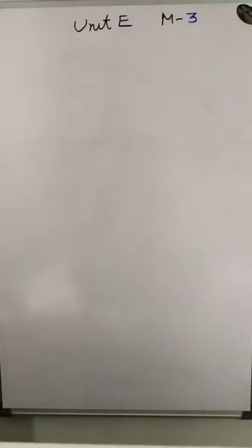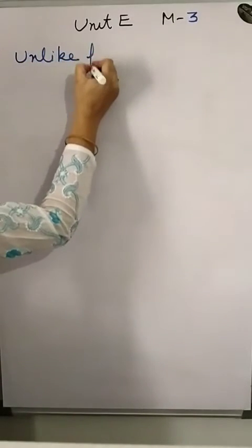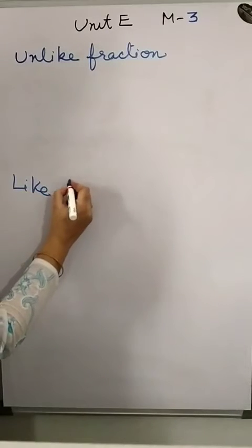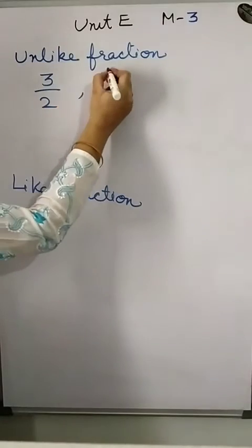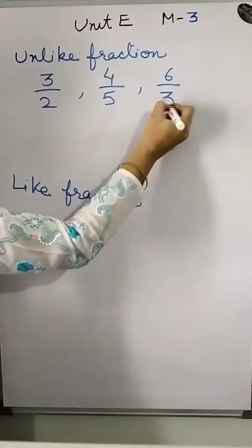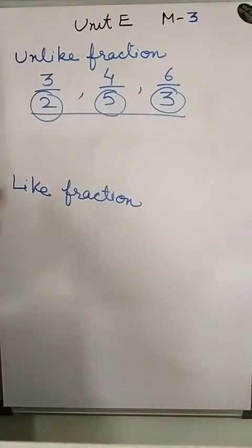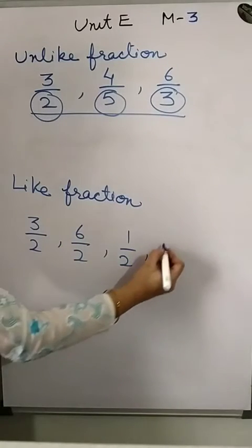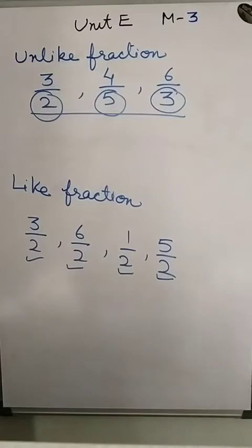Now in module 3, we change unlike fractions into like fractions. Unlike fractions have different denominators — for example, 3 upon 2, 4 upon 5, 6 upon 3 are unlike fractions. Like fractions have the same denominator — for example, 3 upon 2, 6 upon 2, 1 upon 2, 5 upon 2. For like fractions, you can do addition and subtraction just like normal numbers.